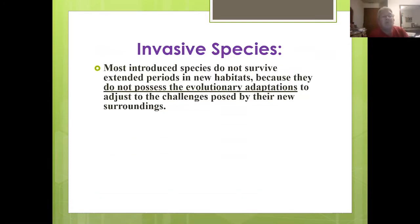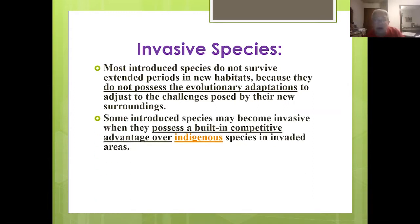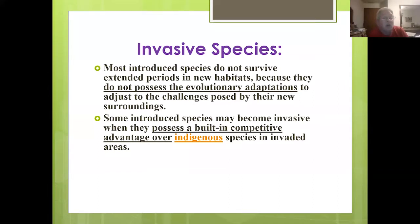Most introduced species don't survive in a new habitat because they don't have the evolutionary adaptations to adjust to the challenges posed by the new surroundings. For example, a ladybug placed in the desert wouldn't survive because aphids don't survive there — it's too hot. Some introduced species may become invasive when they possess a built-in competitive advantage over indigenous species in the invaded area.